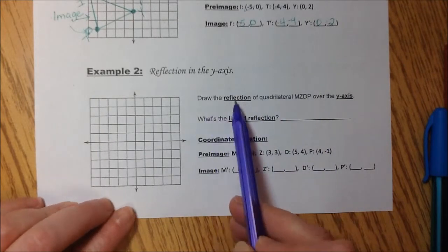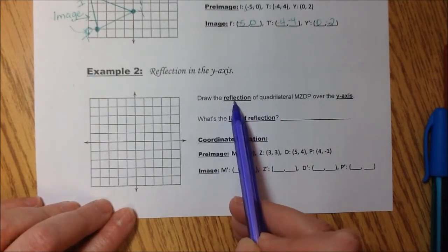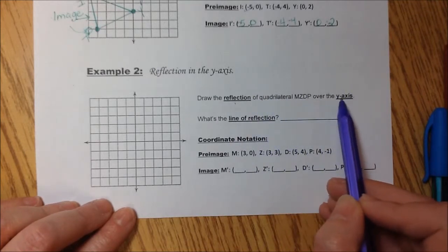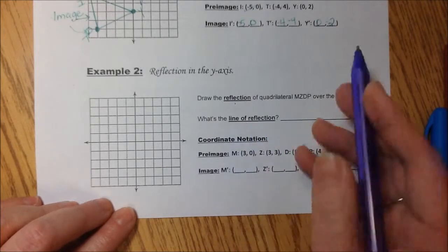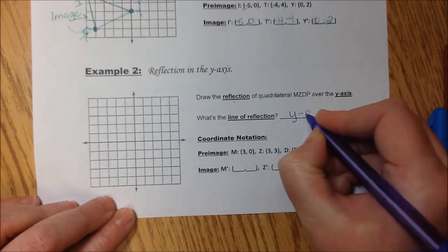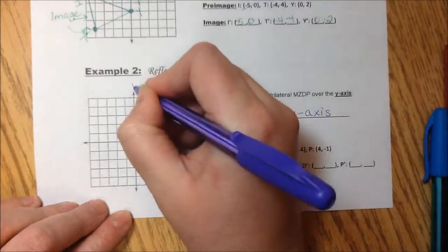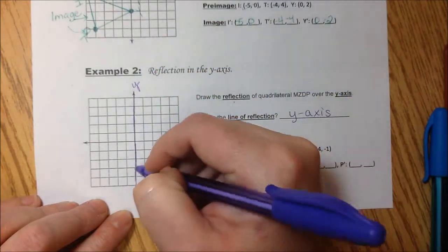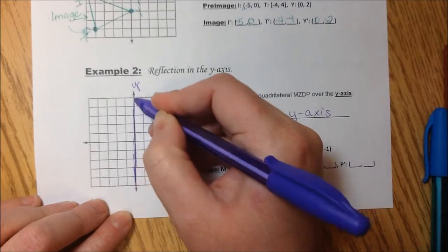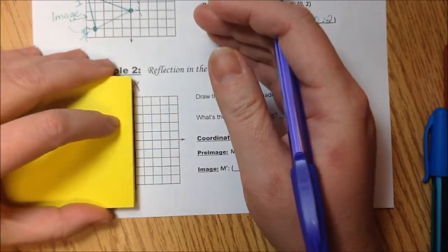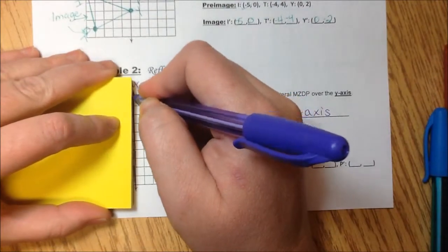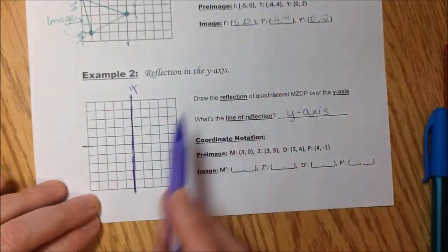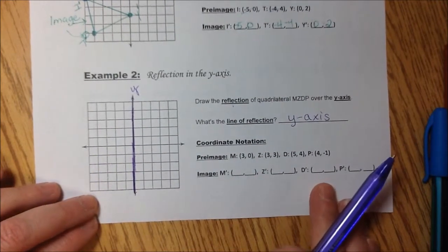Purple. Draw our reflection. So we know we're flipping. Of the quadrilateral MZDP over the y-axis. So what's our line of reflection? It's the y-axis. This is our y. Really, we should use a straight edge to shade that purple. So we know that's what we're reflecting across.